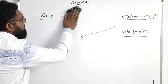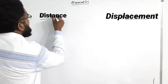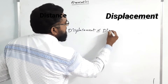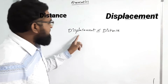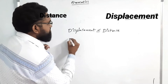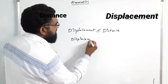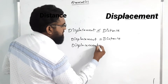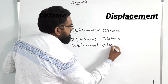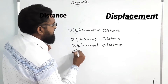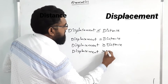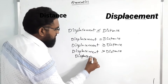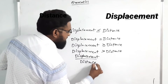Displacement is always less than or equal to distance. So displacement divided by distance is less than or equal to 1. Questions are asked in this model: displacement less than, greater than, or equal to distance, and displacement by distance less than or equal to 1 — these are the correct options.